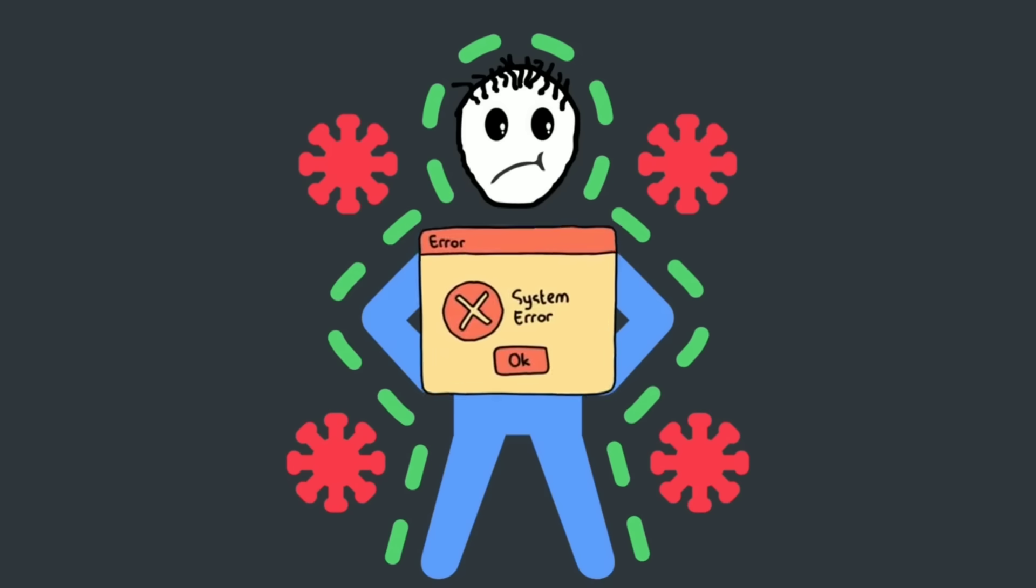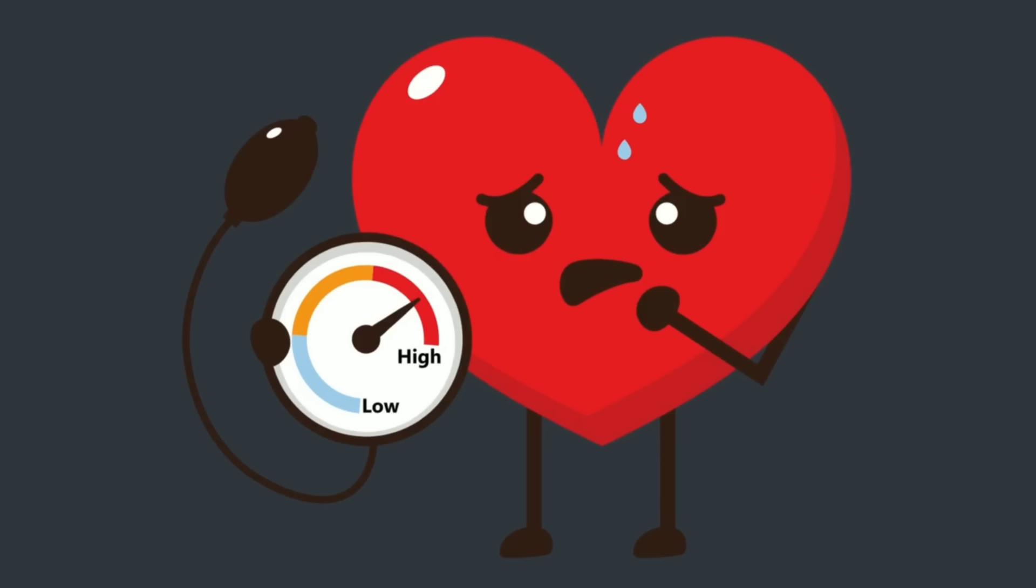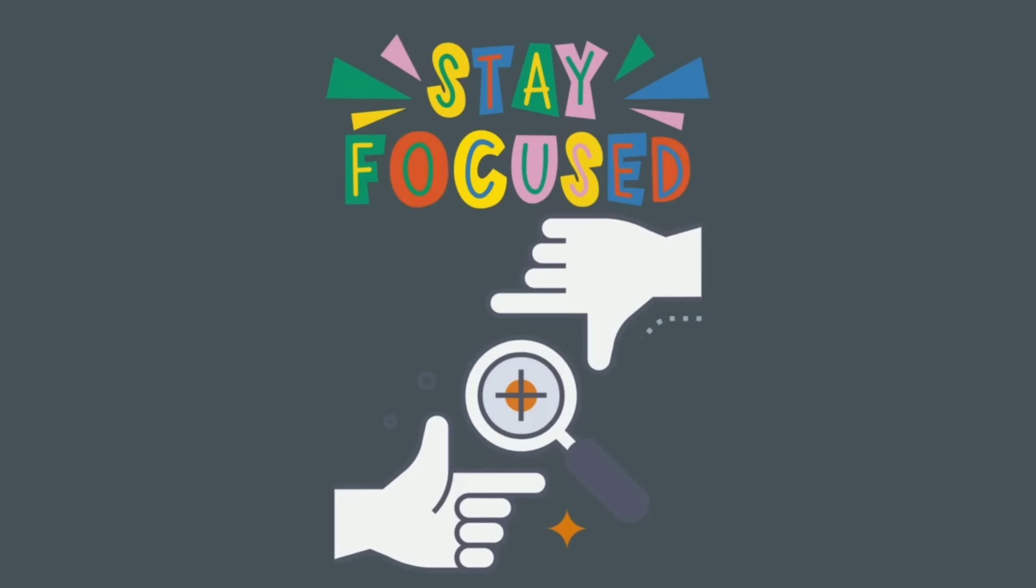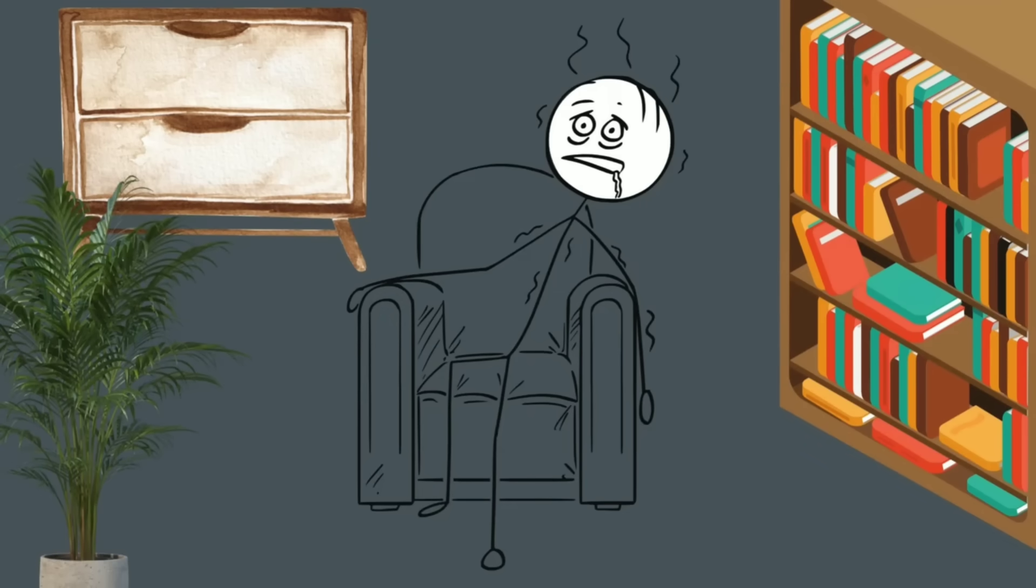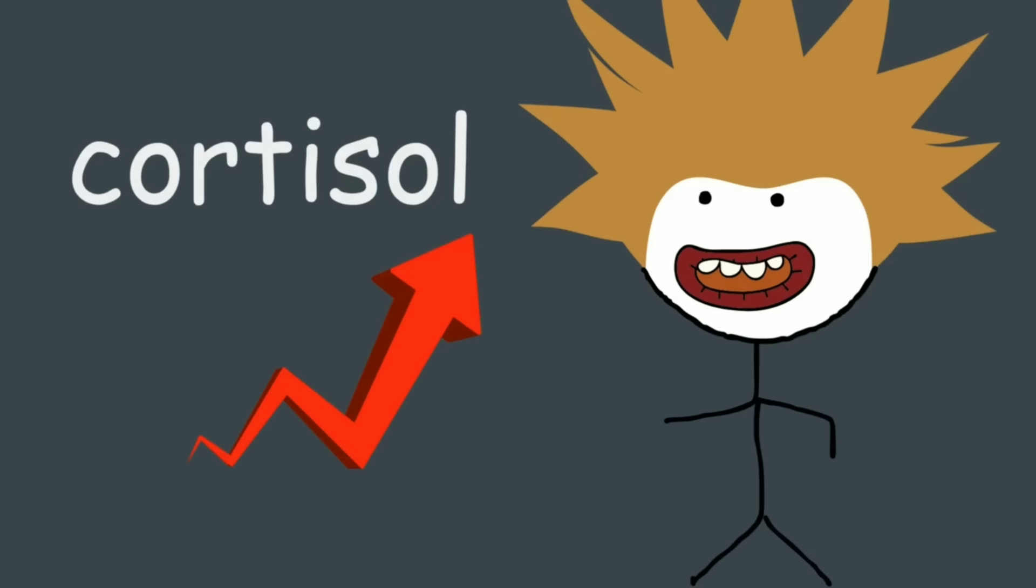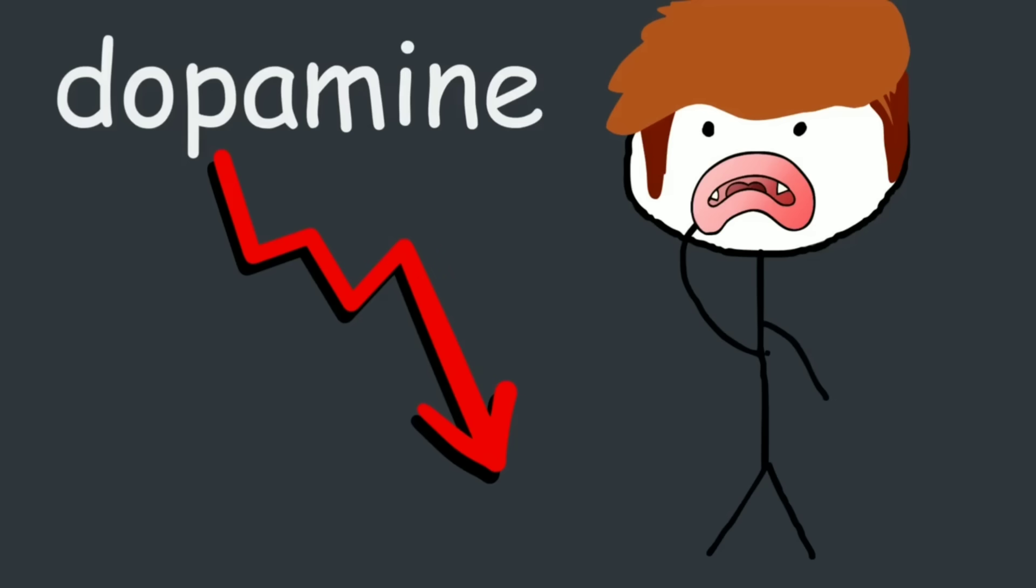Your immune system? Weakened. Your blood pressure? Raised. Your ability to focus or feel motivated? Diminished. And while cortisol rises, something else falls. Dopamine.